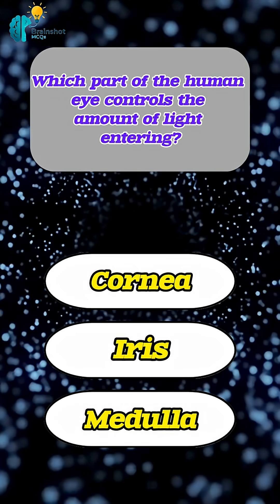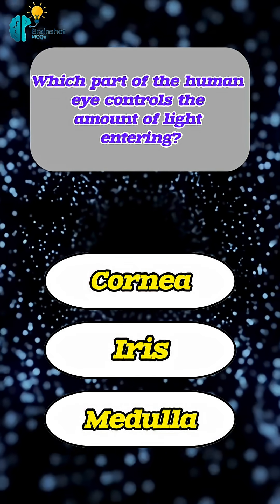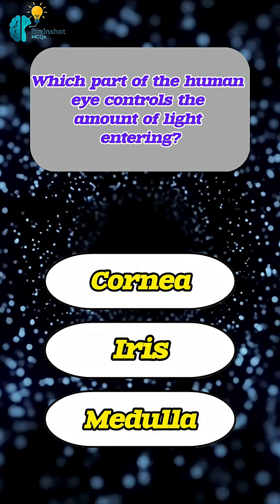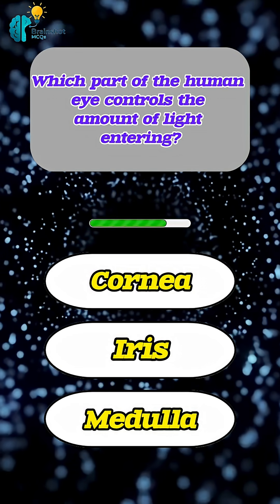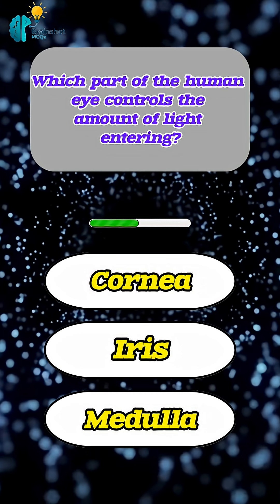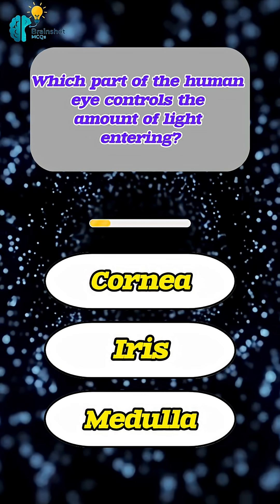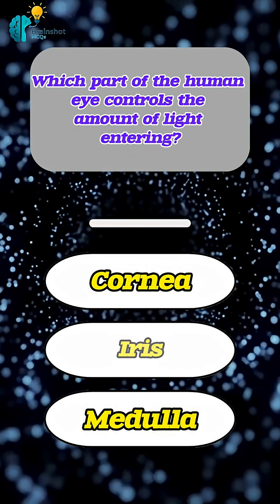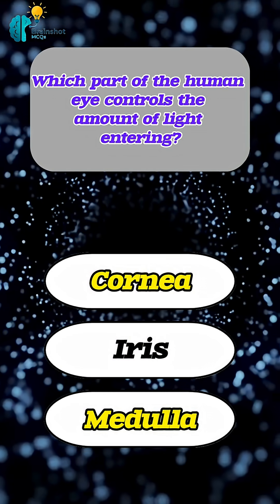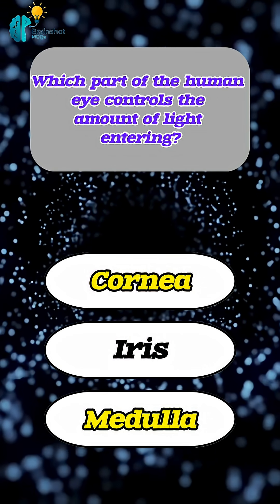Which part of the human eye controls the amount of light entering? Correct answer: iris.